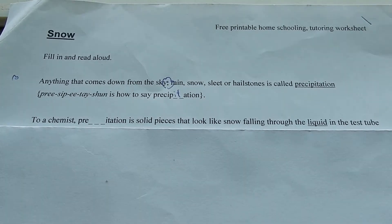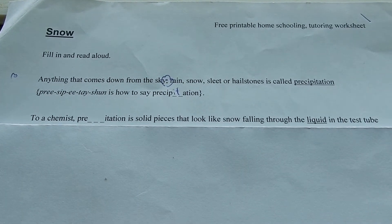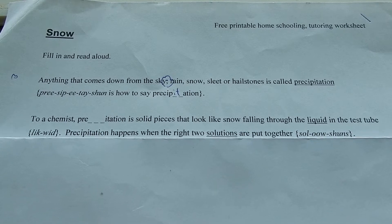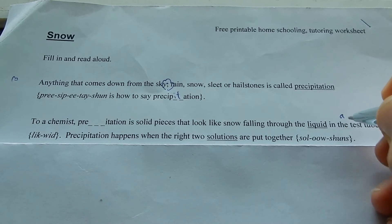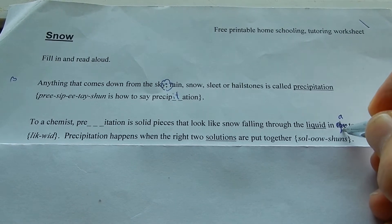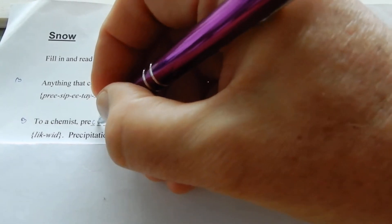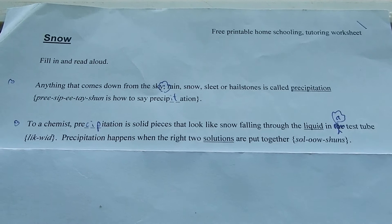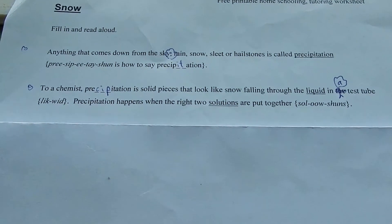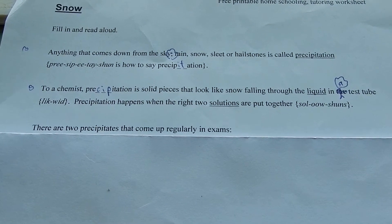To a chemist, precipitation is solid pieces that look like snow falling through the liquid in a test tube. Precipitation happens when the right two solutions are put together.